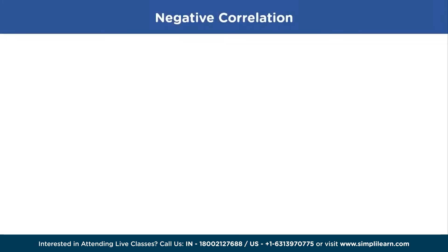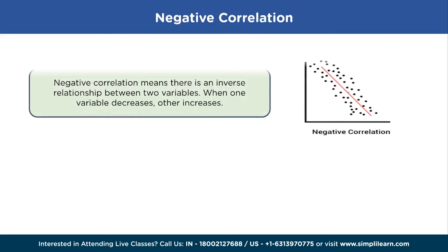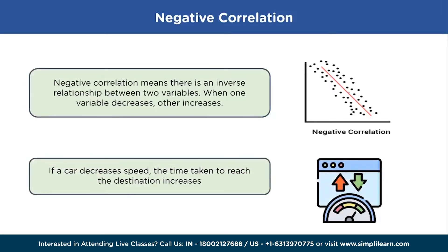Negative correlation is just the opposite. The relationship line has a negative slope and the variables change in opposite directions. For example, if you decrease the speed of a car, the time taken to reach the destination increases. This is negative correlation.